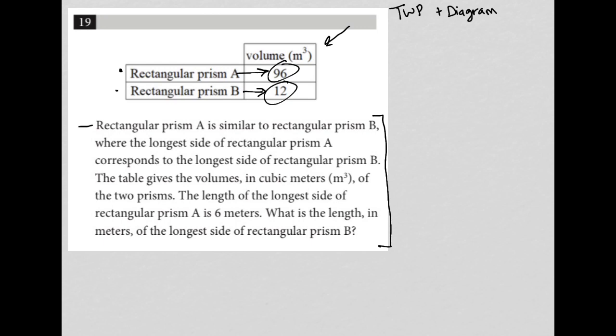The question goes on to say rectangular prism A is similar to rectangular prism B, so we have A similar to B, where the longest side of rectangular prism A corresponds to the longest side of rectangular prism B. So I'm going to just draw some prisms here, which are just three-dimensional solids. So this is A, and then B looks like it's going to be quite a bit smaller based upon the volume given in the table. So that's B.